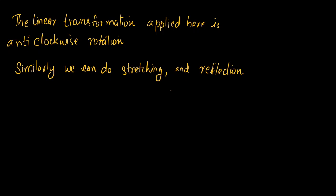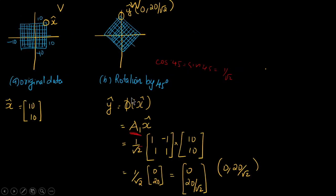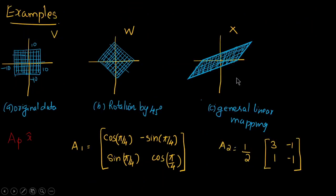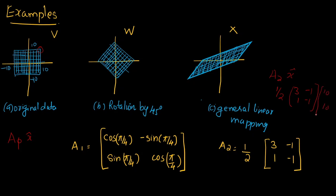We can also apply shearing. Take the same vector X = (10, 10) and apply the shearing transformation to get its image in vector space X. Use A2 times X: (1/2) * [[3, -1], [1, -1]] times [10, 10]. Compute this to find the resulting point in the third vector space — that is the shearing transformation applied.